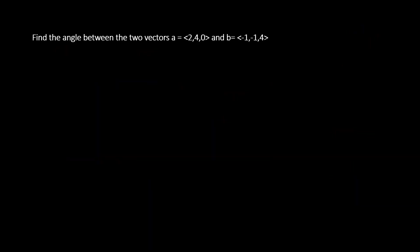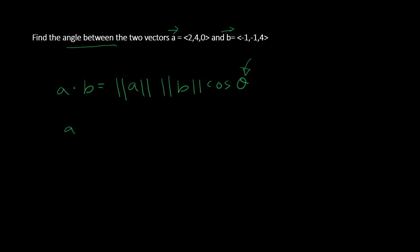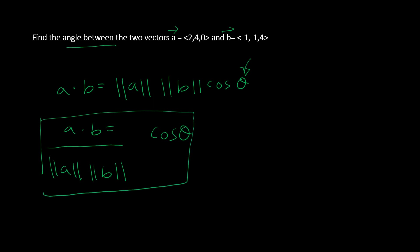Now let's find the angle between vector a = (2, 4, 0) and vector b = (-1, -1, 4). To find the angle, we know a·b equals magnitude of a times magnitude of b times cosine theta. Solving for theta: cosine theta equals a·b divided by (magnitude of a times magnitude of b), so theta equals cosine inverse of that expression.